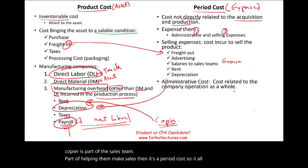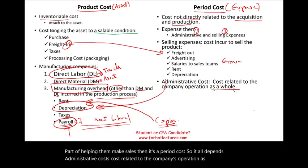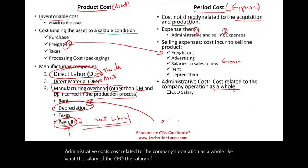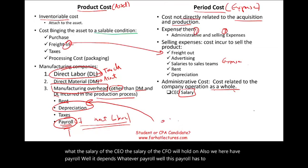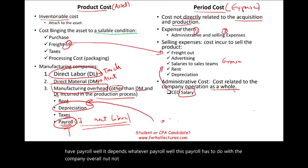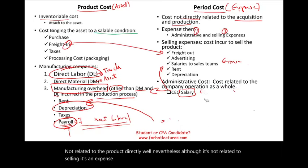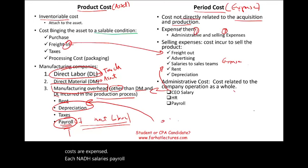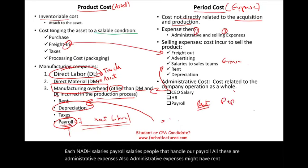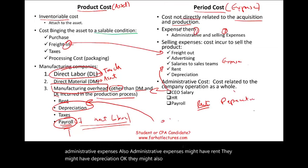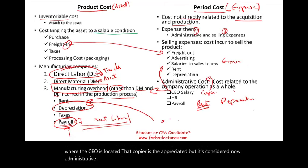Administrative costs are costs related to the company's operation as a whole — like the salary of the CEO or CFO. These are period costs even though they're not related to selling. HR salaries, payroll department salaries — all of these are administrative expenses. Administrative expenses may also include rent and depreciation, such as a copier in the CEO's building, which is considered an administrative cost, not a selling or product cost.